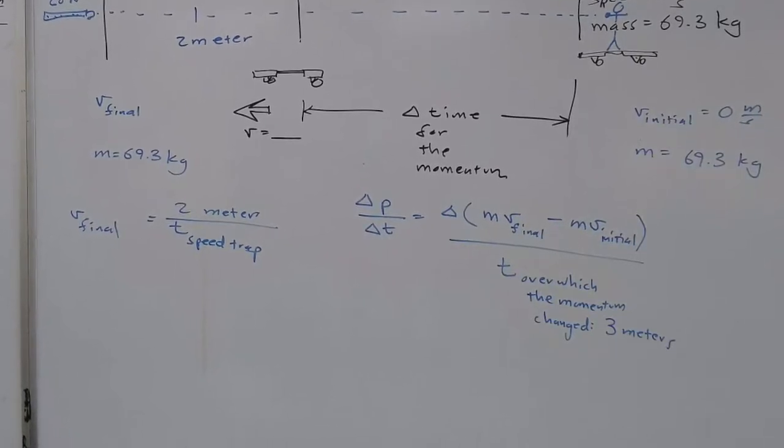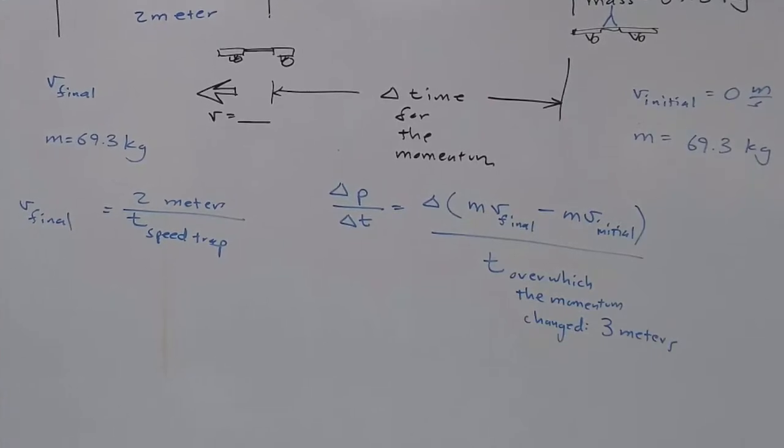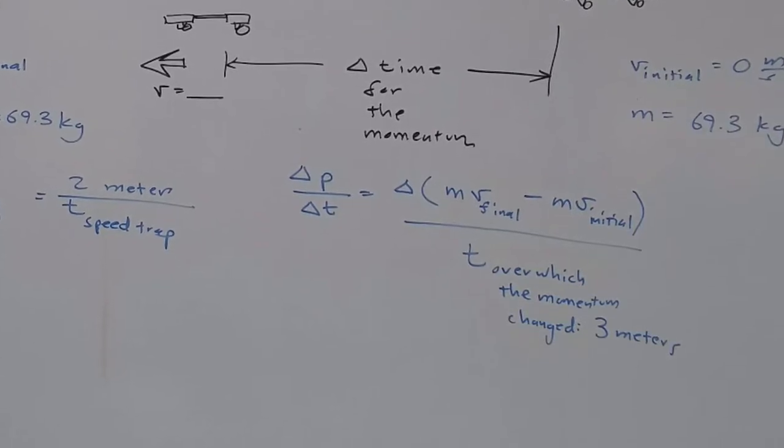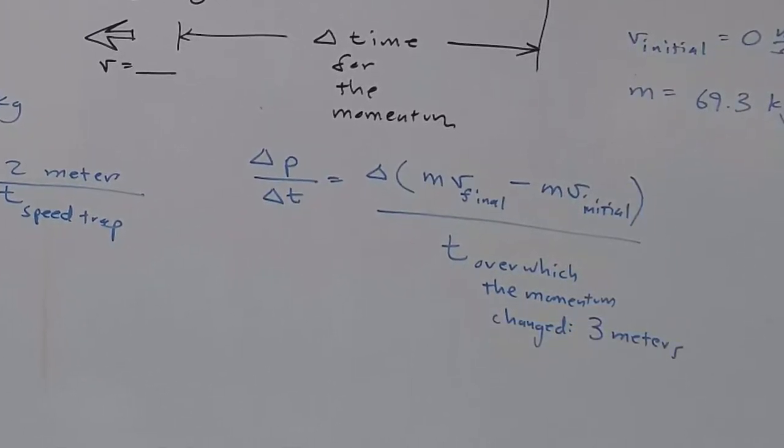divided by the time over which that change in momentum occurred. Remember, the force is proportional to the change in momentum, and change happens over time. At the bottom of the whiteboard, you'll see mass times velocity final minus mass times velocity initial, divided by the change in time.